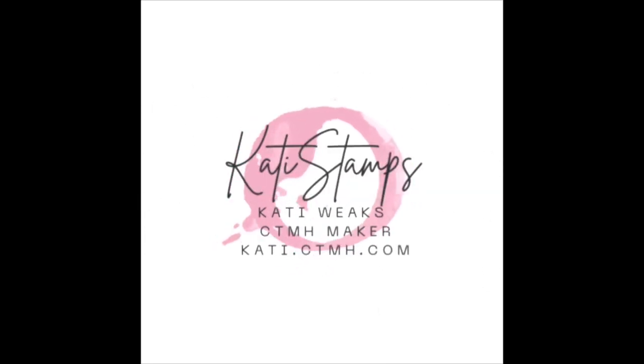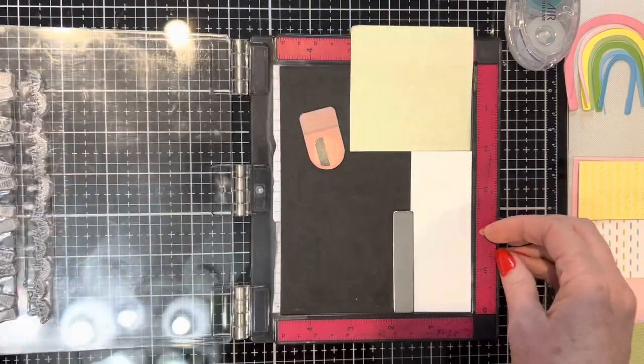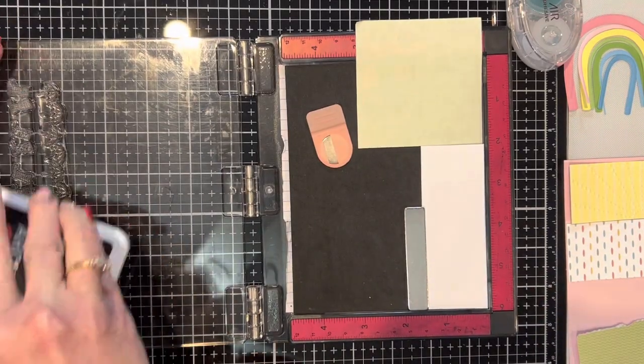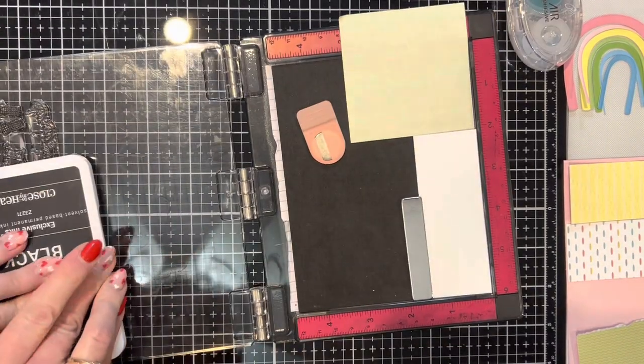Hi, this is Katie Weeks, your independent Close to My Heart maker, and today I'm here to share with you the first of three cards for the February 2023 Stamp of the Month, and the stamp set is called Springtime Borders.